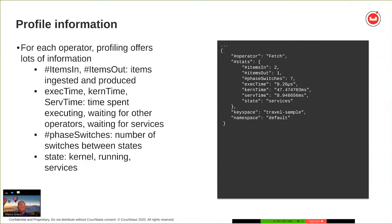Now let's touch on profiles. The profile is the representation of an execution tree. What it does is contain an extra field called stats with some interesting items. You've got items count, execution times, the state, and phase switches. The items in and out are the number of items that each individual operator receives if it's a consumer, or produces if it is a producer.